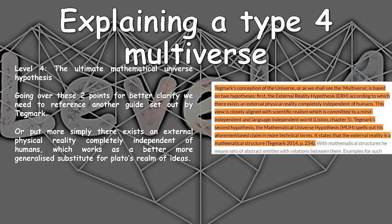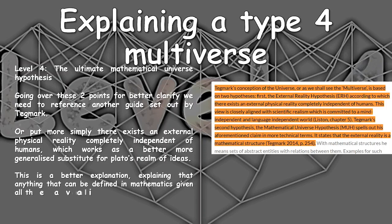On to the second hypothesis: the Mathematical Universe Hypothesis (MUH). Tegmark spells out his claim in more technical terms — it states that the external reality is a mathematical structure (Tegmark, 2014, p. 254). This is a better explanation of what can be anything defined in mathematics: you simply say anything that can be defined in mathematics can be contained in a Type 4 multiverse.